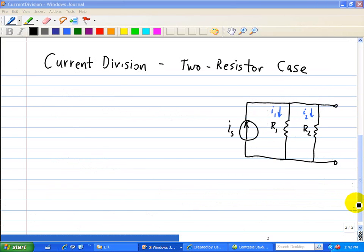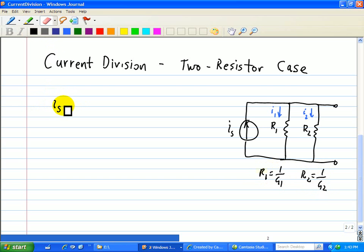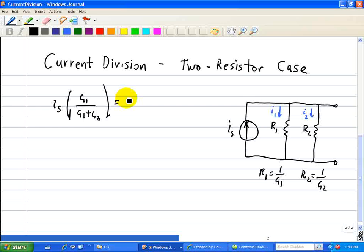Now let's do one current division example with a two resistor case. So let's say we have IS as our input current, and we have two resistors, R1 and R2 in parallel. And again we note that R1 is equal to 1 over G1, and R2 is equal to 1 over G2. So here we note that using the current division, that IS times G1 over G1 plus G2 is equal to I1.